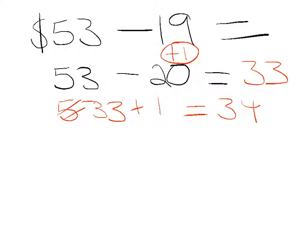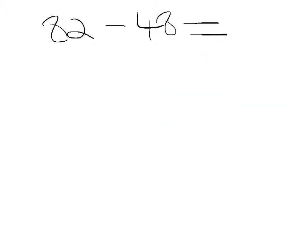Let's try another example. With this example here, it's 82, and then we have to make this number here into a tidy number, and we're going to make it 50. Now this time we've not added 1 to that number, we've added 2. So we need to keep that to the side.